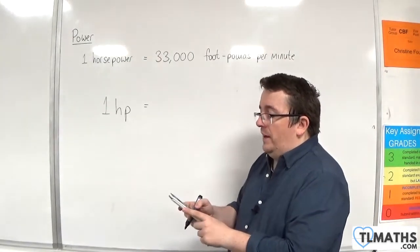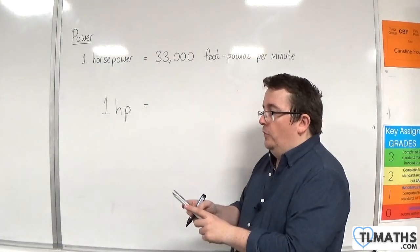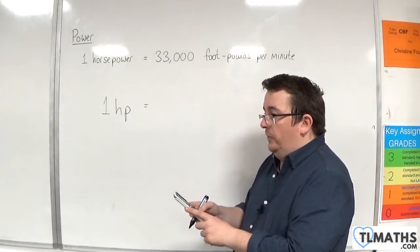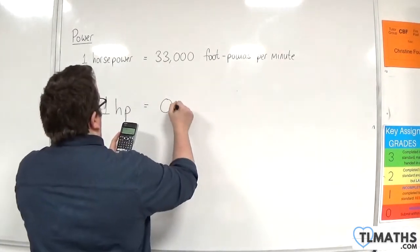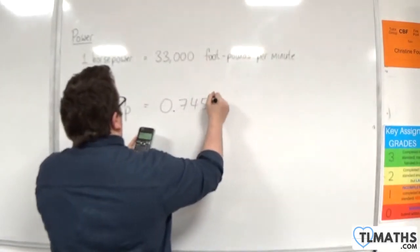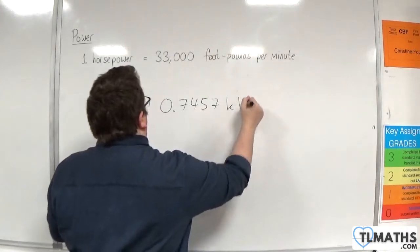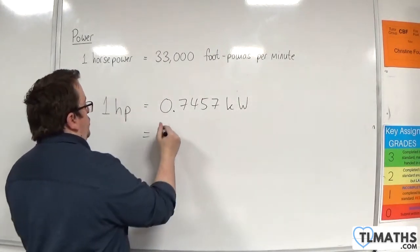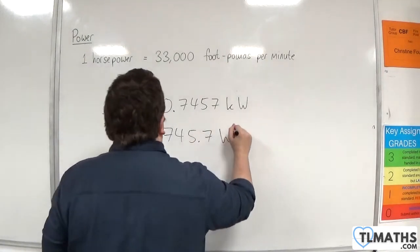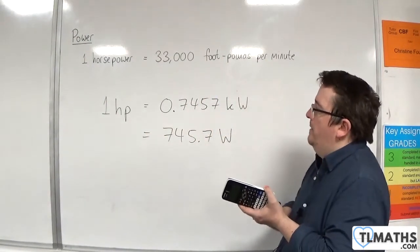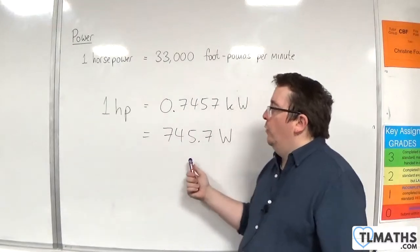You should get 7,457 over 10,000, which is 0.7457 kilowatts, which is 745.7 watts. And so that's what we mean by 1 horsepower.